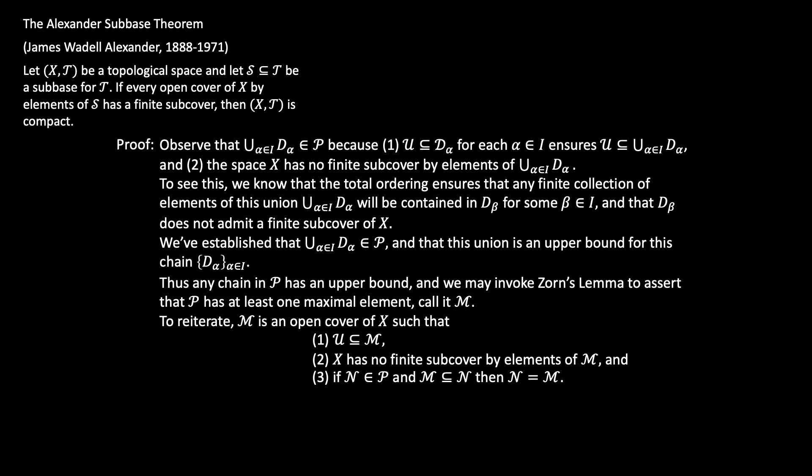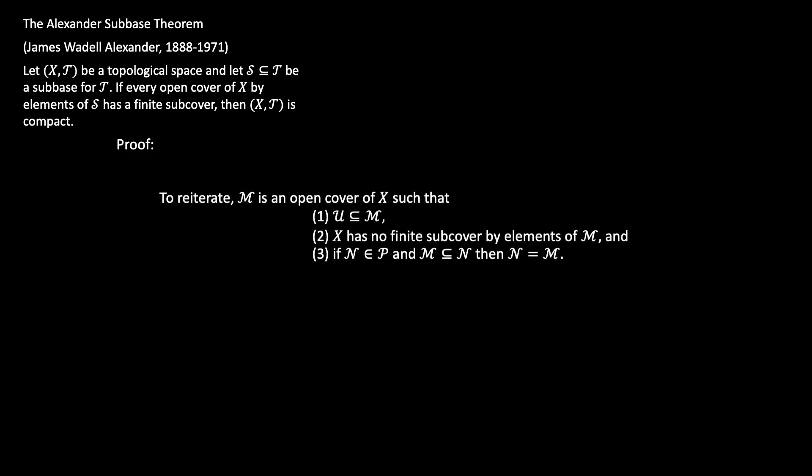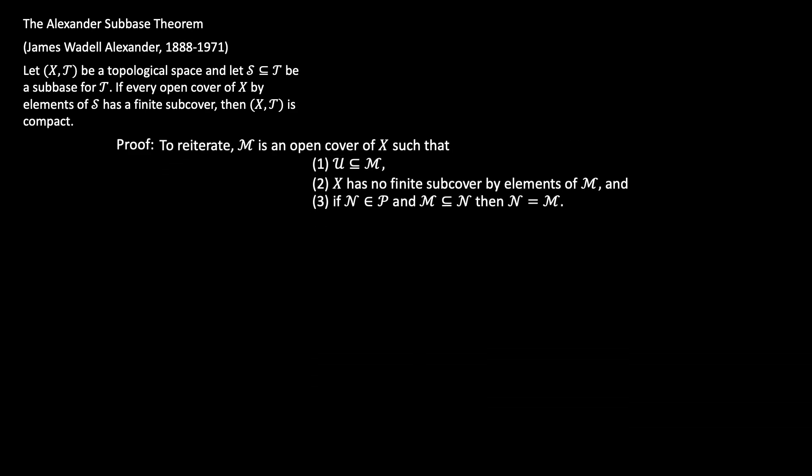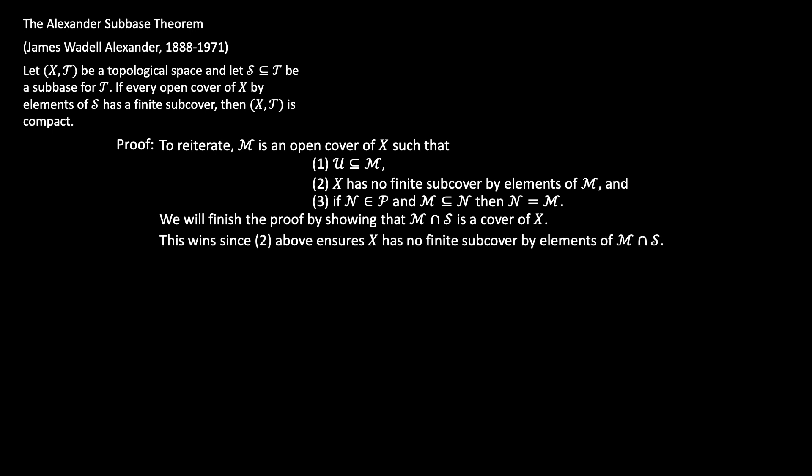We're going to finish the proof by showing that M intersected with our subbase S forms a cover of X. That wins because condition 2 ensures X has no finite subcover by elements of M ∩ S — if it did, that would be a finite subcover by elements of M, which doesn't exist by condition 2.